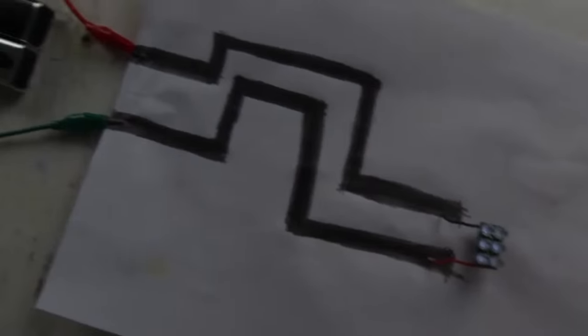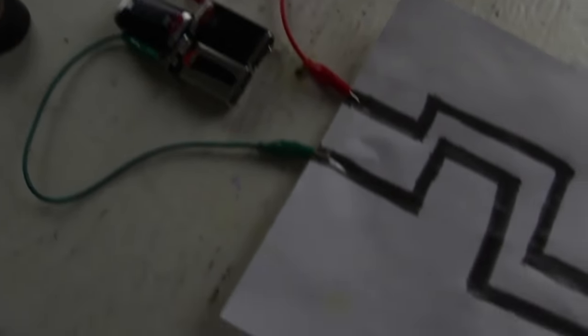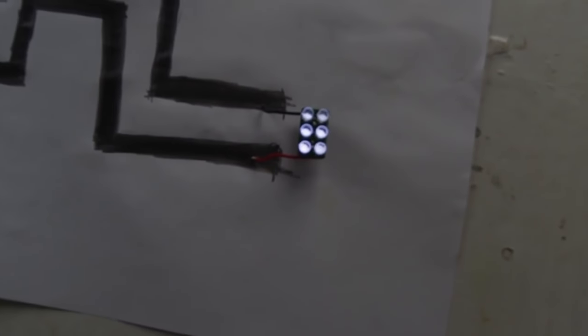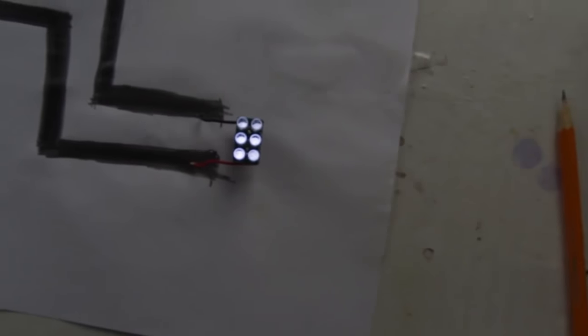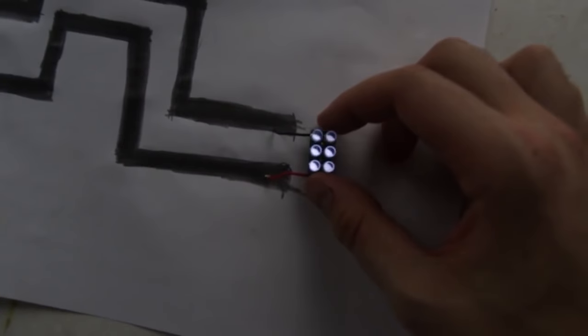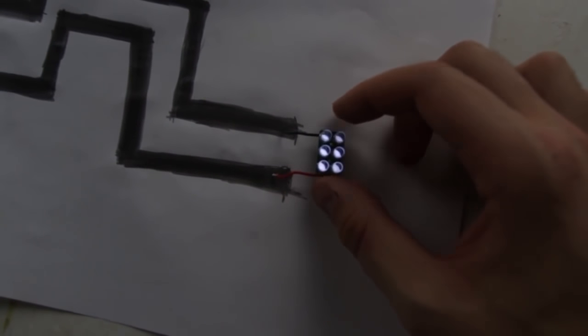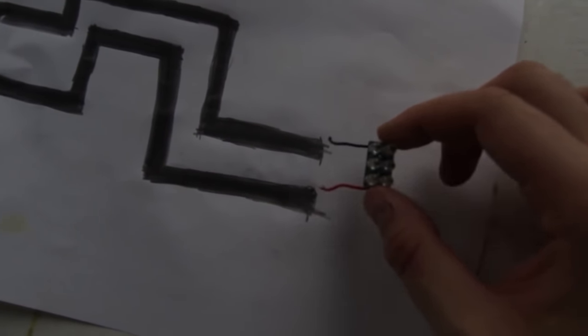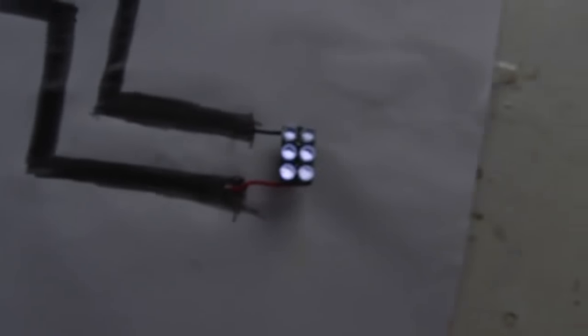Pretty awesome, huh? It lights up from a graphite pencil. It's just paper and graphite, and you see the electricity going through. If I lift it up, you see it's turned off. Boom—on again. Off. On. Graphite is conductive.